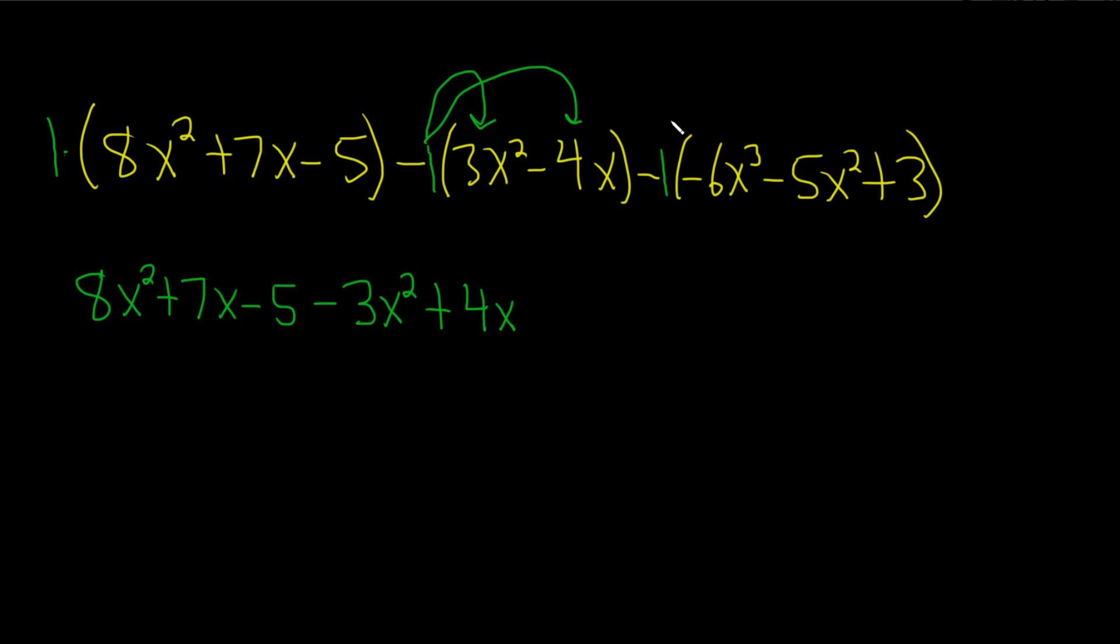Then we do the same thing here. Negative 1 times negative 6x cubed becomes a positive 6x cubed. And negative 1 times negative 5x squared becomes a positive 5x squared. And the very last one is negative 1 times positive 3. That becomes a negative 3.